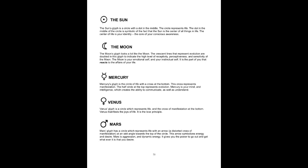Mercury. Mercury's glyph is the circle of life with a cross at the bottom. This cross represents manifestation. The half circle at the top represents evolution. Mercury is your mind and intelligence, which creates the ability to communicate as well as understand.